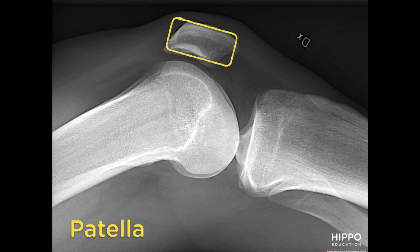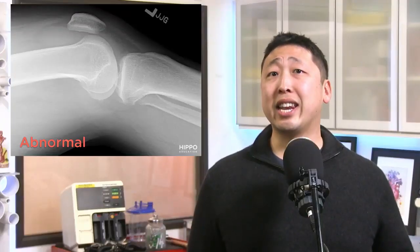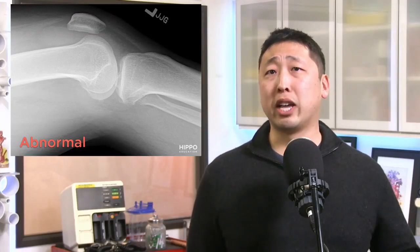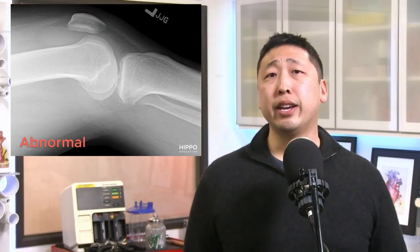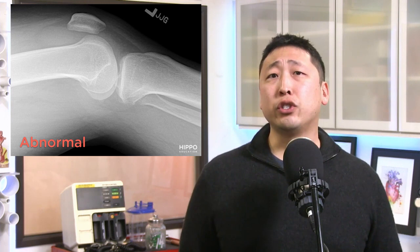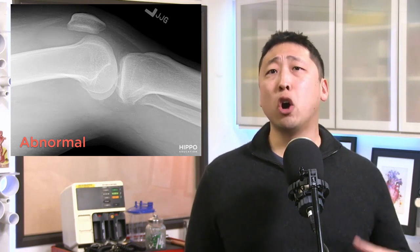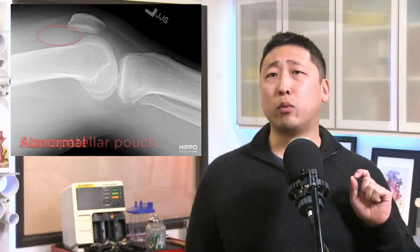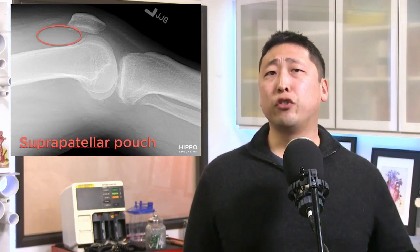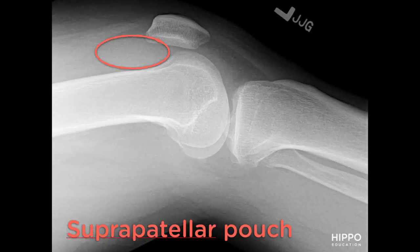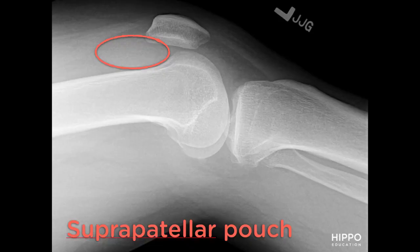Finally, in a normal knee x-ray, the patella is not anteriorly displaced. Now let's look at an abnormal lateral knee x-ray. In knee effusions, you'll often see a homogeneous rounded soft tissue fluid density in the suprapatellar pouch.